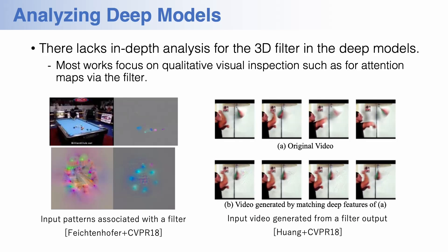To analyze how the 3D CNN works on video frames, we need to analyze the mechanism of feature extraction by the convolutional filters, especially from the viewpoint of temporal dynamics for the action classification. For that purpose, previous works mainly focus on qualitative analysis by means of visual inspection, such as by visualizing input patterns associated with the filter and generating plausible video frames based on the filter response. However, in this literature, there lacks in-depth analysis for the spatial temporal filters themselves.